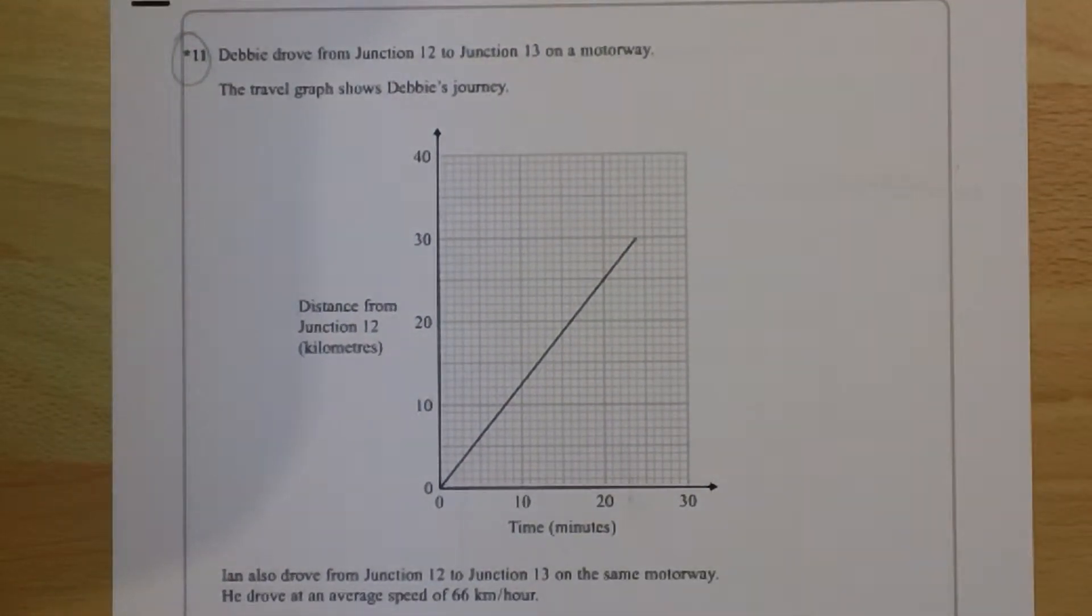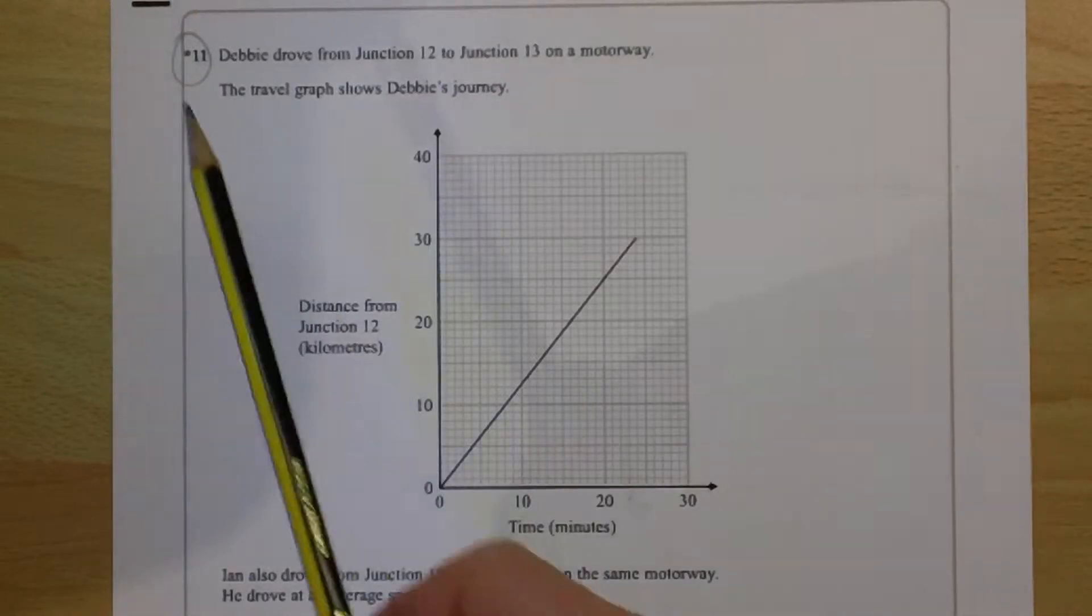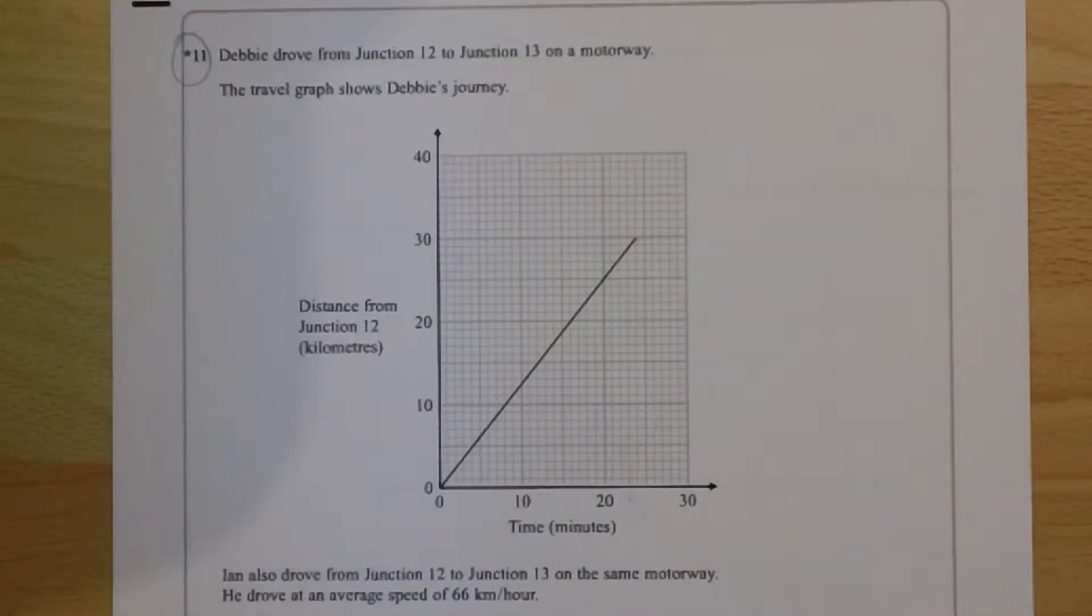Question number 11. We've got a distance-time graph that shows Debbie's journey from junction 12 to junction 13 on a motorway.